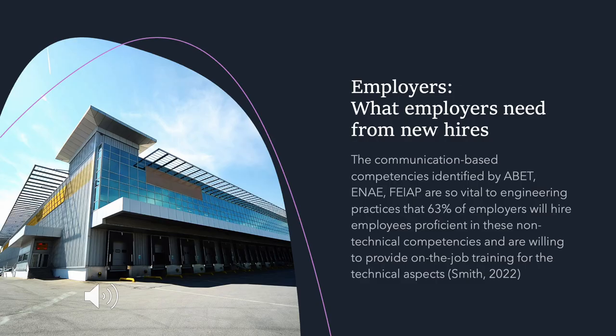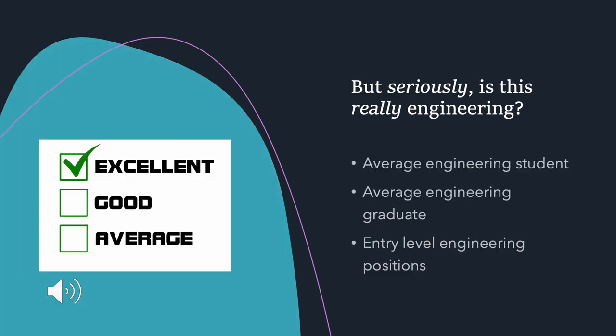That engineering graduates come equipped with these communication-based competencies is extremely important to engineering employers. But does it really make sense to include communication in engineering education? It does, and hopefully this is an obvious yes for you. Engineers reportedly spend about 60% of their professional time communicating, usually in one-on-one and small group situations, which means that interpersonal communication competence — including the intercultural communication aspect — is really important.